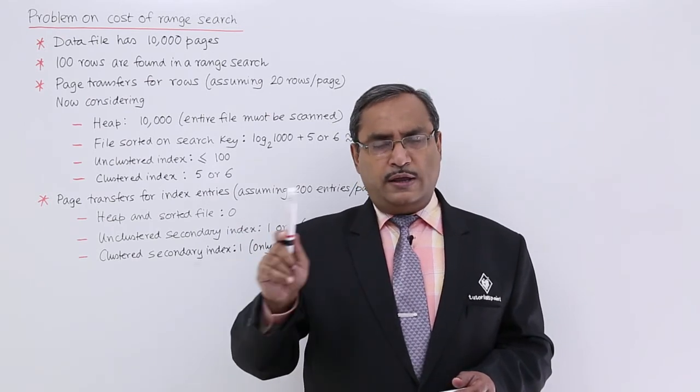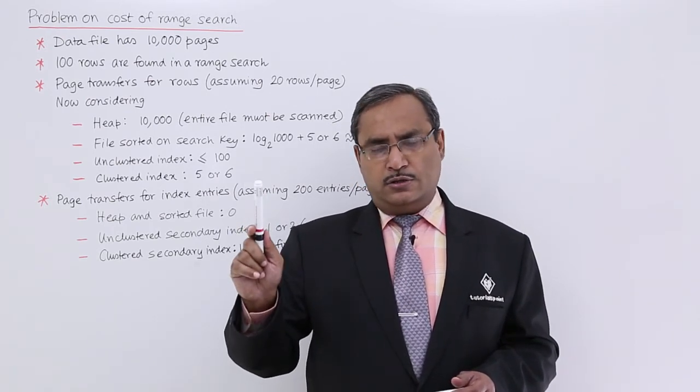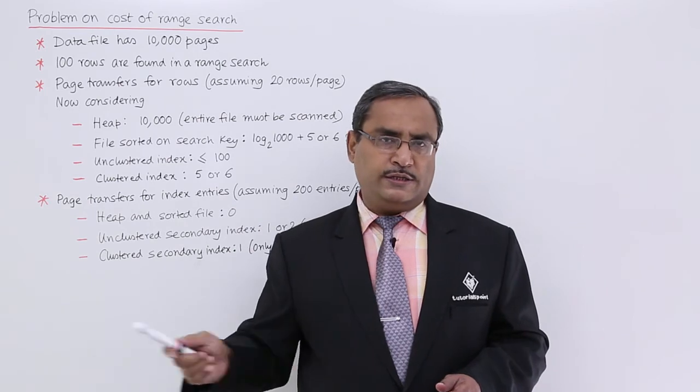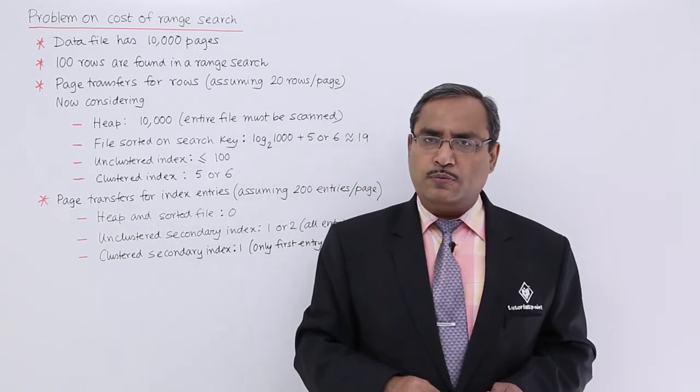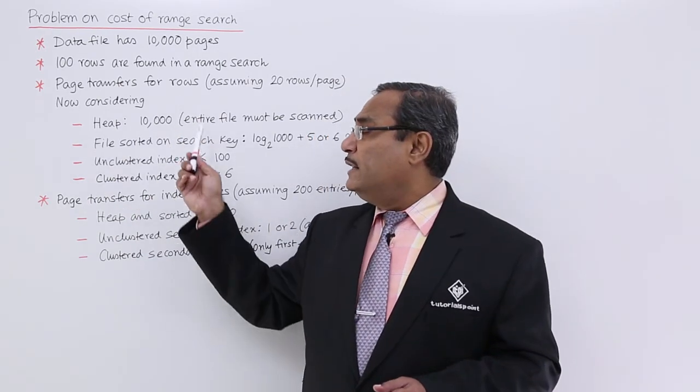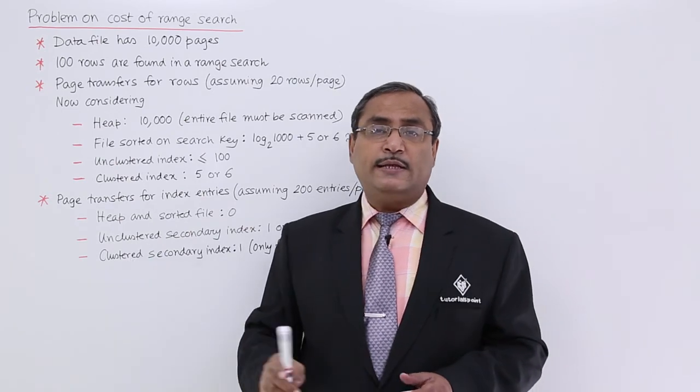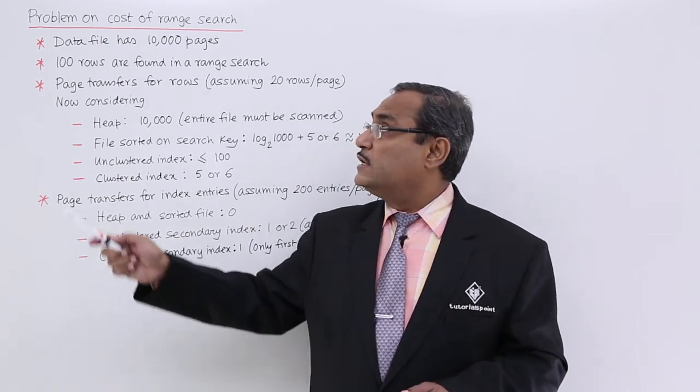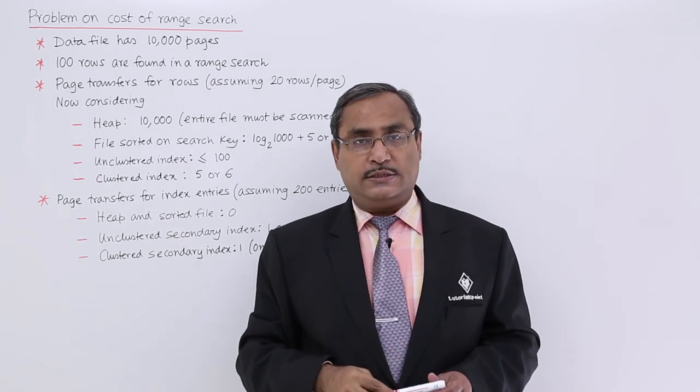If you can find the starting row number then obviously I can fetch the next 100 number of rows. So in this way we are having this respective complexity analysis and cost analysis for a problem on range search.